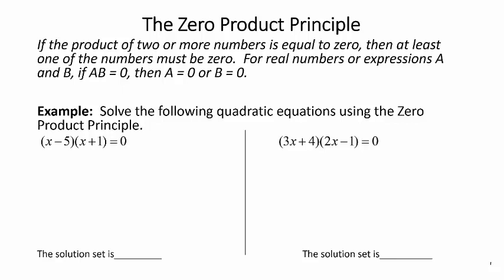Since we have x minus 5 as one of the factors in the product and x plus 1 as the other factor, we're going to set them both equal to zero. So x minus 5 will be equal to zero or x plus 1 equals zero. So solve them both.